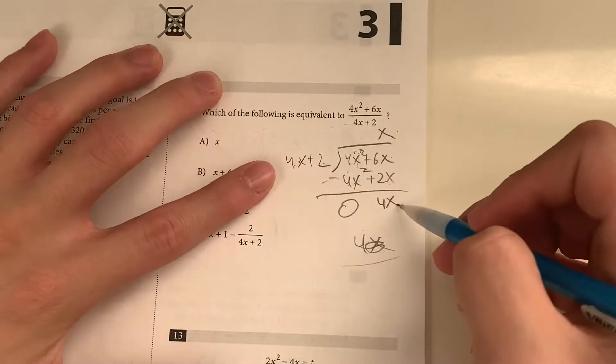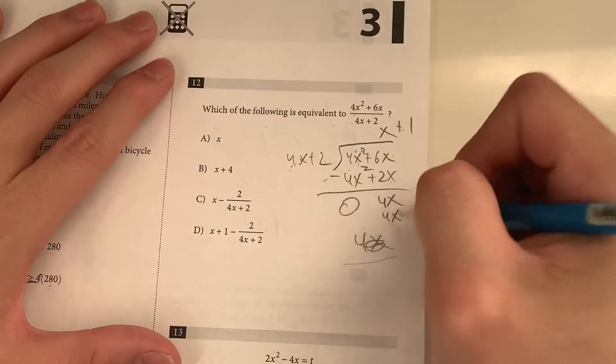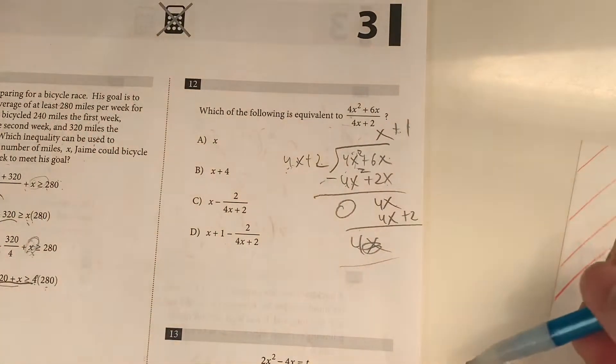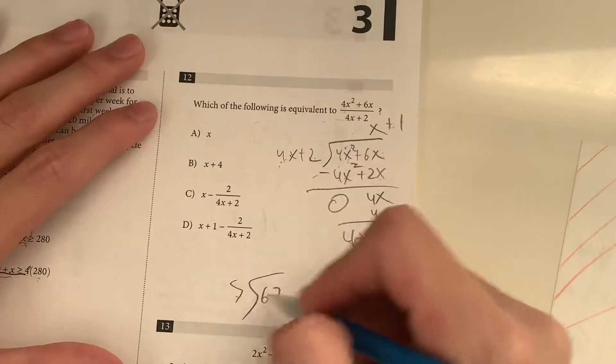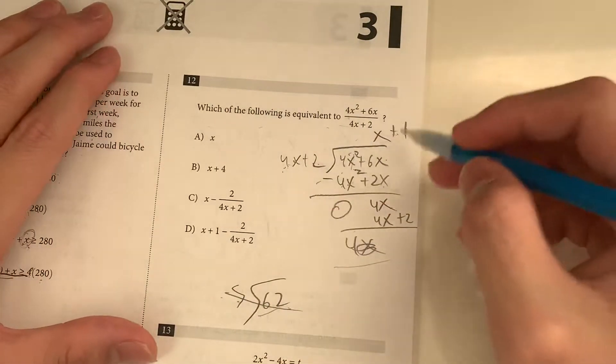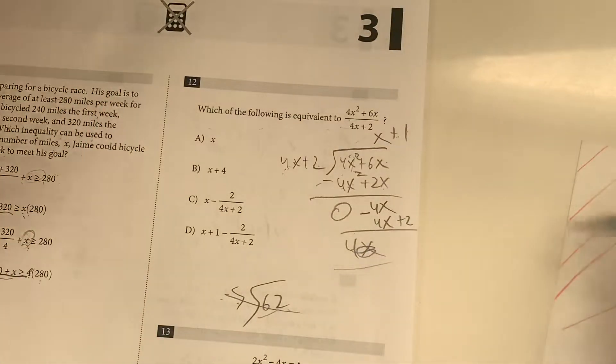So what we do, how many times does 4x go into 4x? One time, right? 1 times 4x is 4x. 2 times 1 is 2. Simply what we're doing is just normal long division, right? As you would divide 5 and 62, you just see how many times it goes into the first one. Multiply everything out. So same thing. And then we subtract, right? Normal division, you subtract after multiplying.